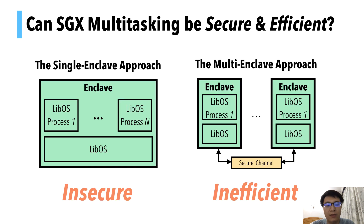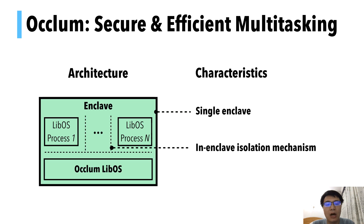We have seen the two approaches, and neither of them is satisfying. The single-enclave approach is insecure due to the lack of process isolation, while the multi-enclave approach is very poor in performance. So the question is: can we achieve both security and performance? We present Occlum, a system that aims to achieve both security and performance for multitasking in SGX enclaves.